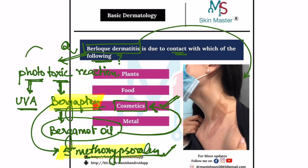You can see that this is one exposed area where the patient applied this chemical, and later on, after ultraviolet radiation exposure, this pigmentation was seen. So I hope this is very clear to all of you. The answer here is cosmetics.